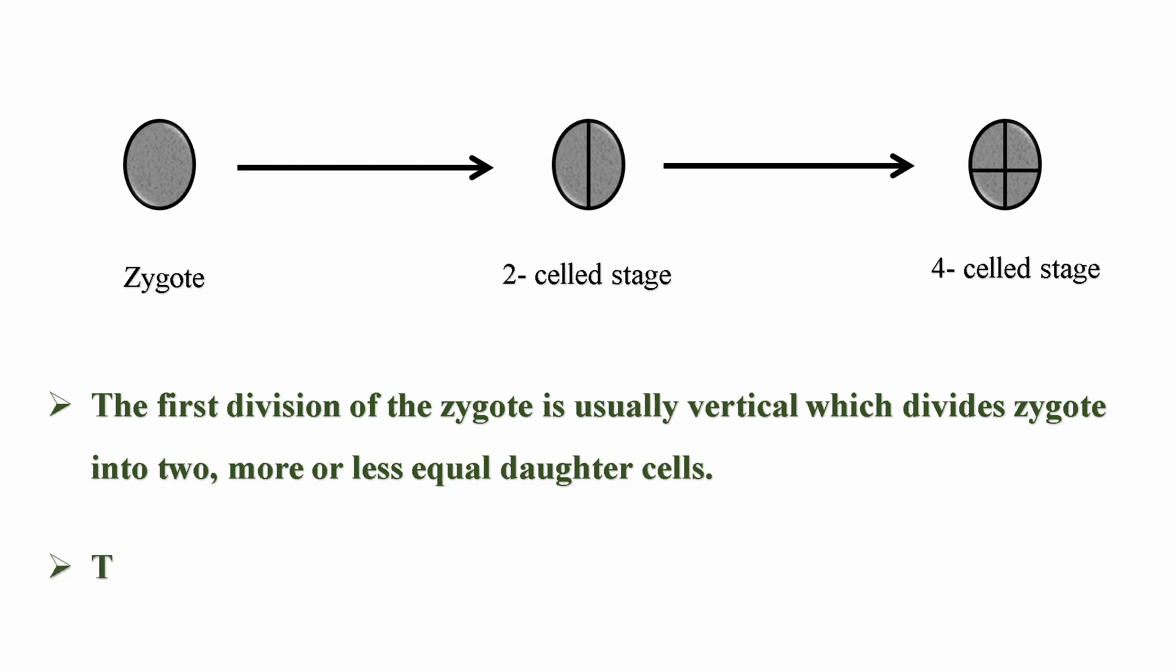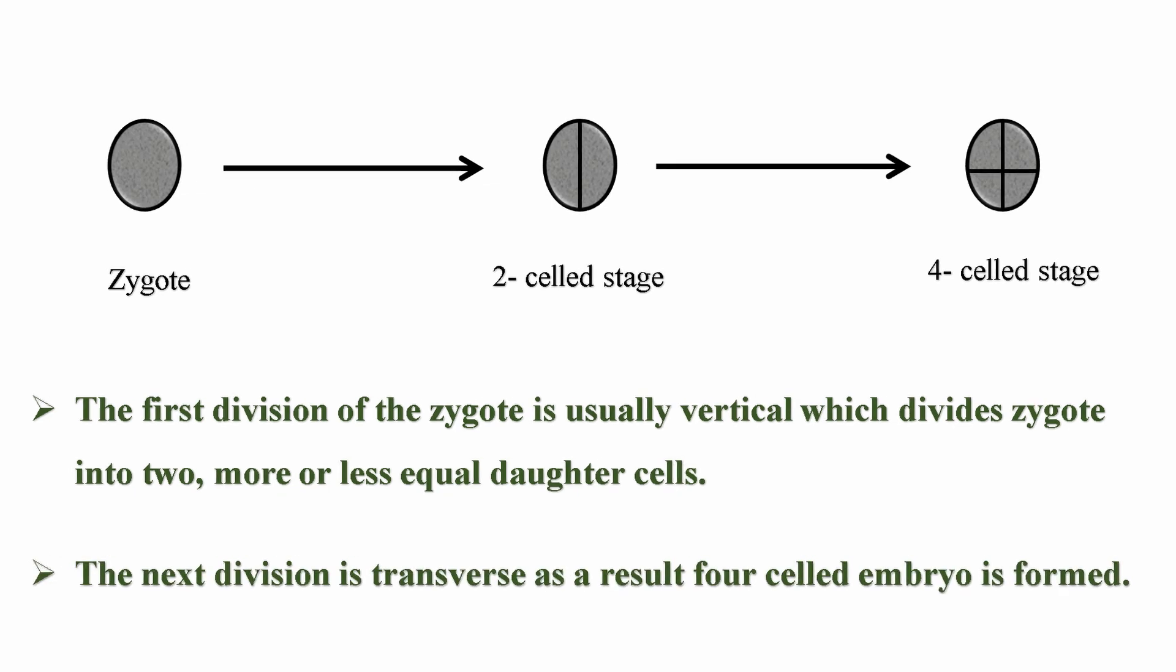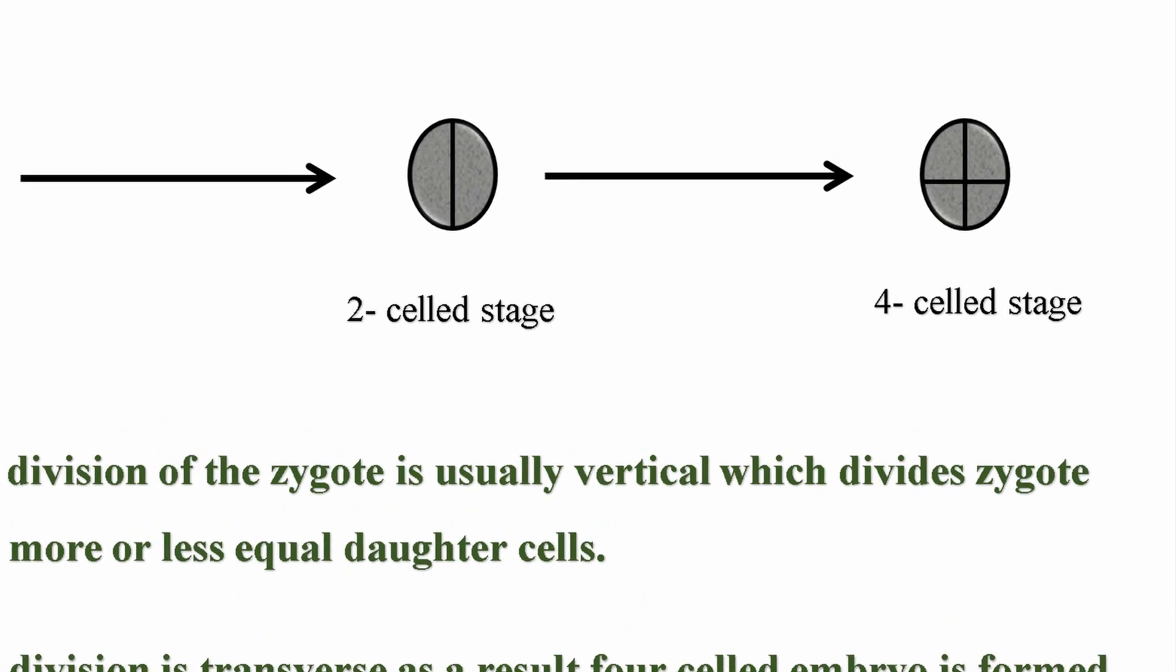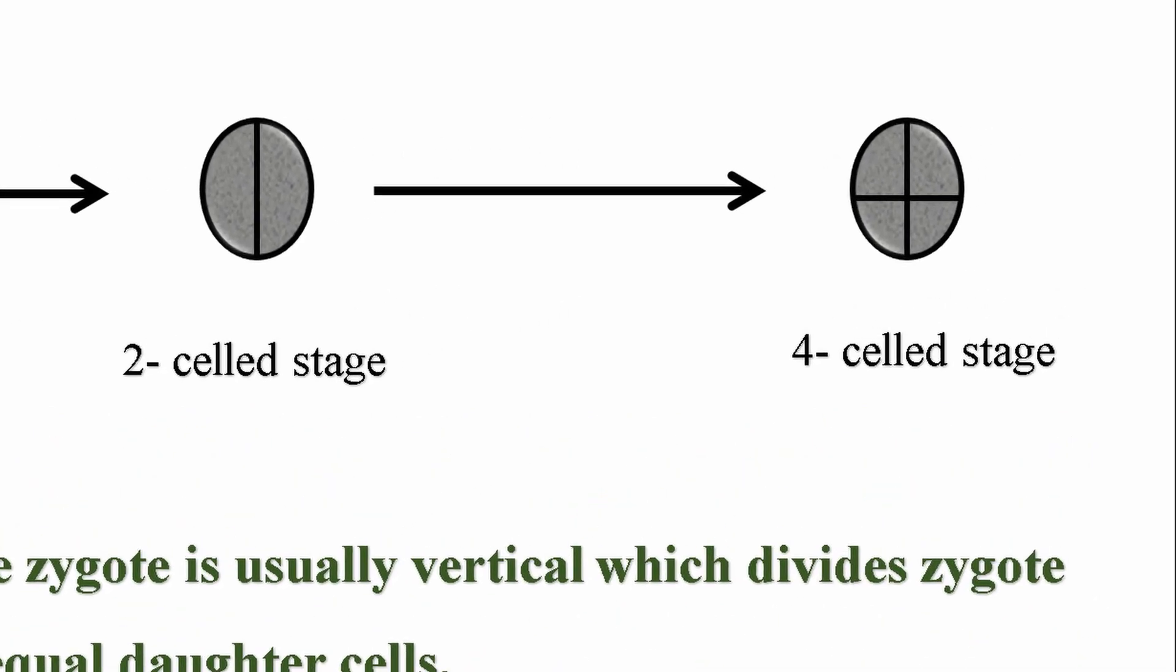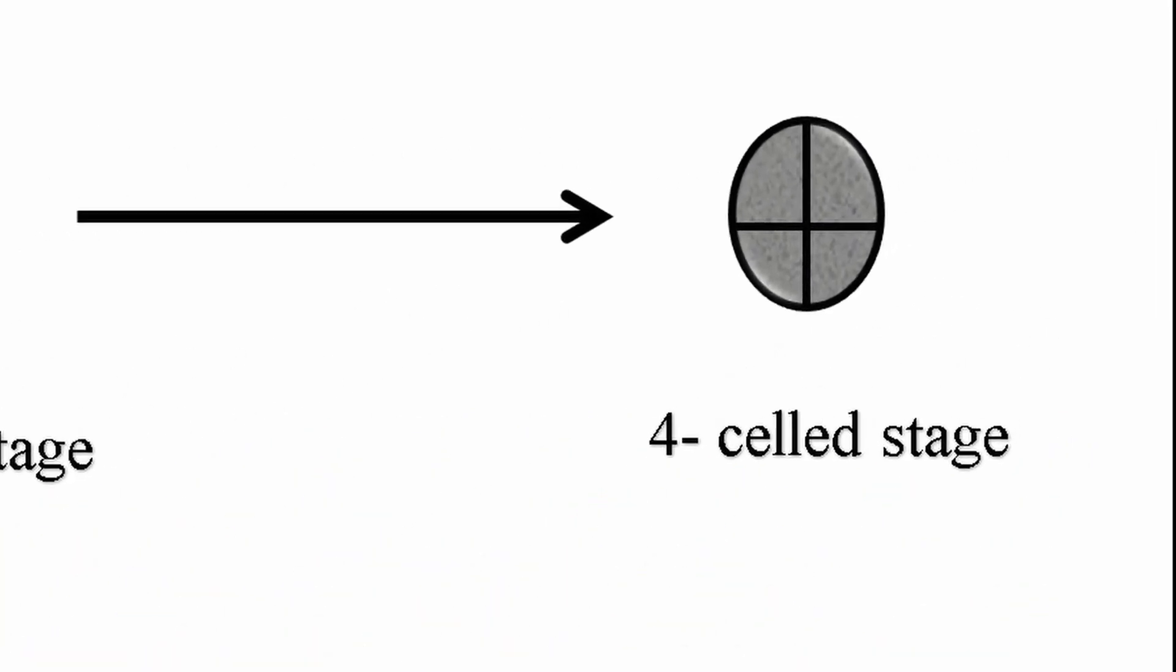The first division of the zygote is usually vertical which divides zygote into two more or less equal daughter cells. The next division is transverse. As a result, four-celled embryo is formed. Out of four cells, the upper two cells are usually larger than the basal ones.